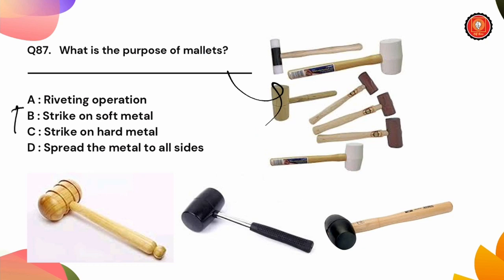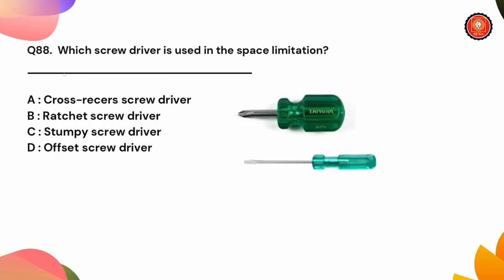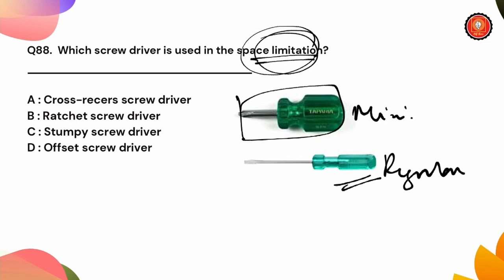Which screwdriver is used in space limitation? Options are cross head screwdriver, ratchet screwdriver, stubby screwdriver, or offset screwdriver. In small space limitation, we use a stubby screwdriver.